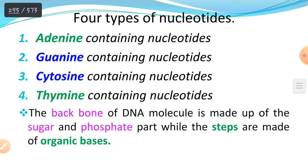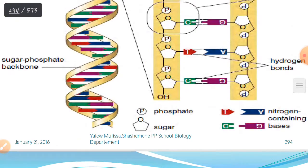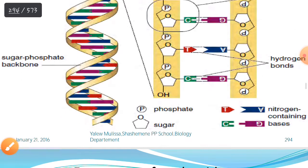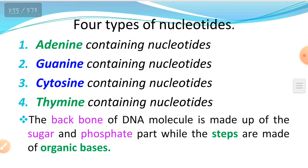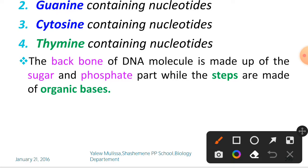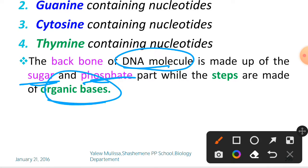DNA has four types of nucleotides. The first one is adenine, the second one is guanine, the third one is cytosine, and the fourth one is thymine. The backbone of the DNA molecule is made up of sugar and phosphate, while the steps are made of organic bases.